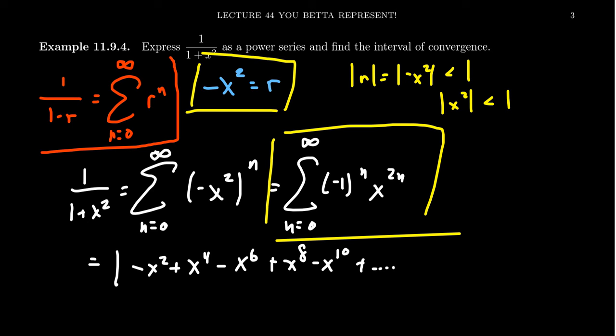When we take the square root of both sides, we need the absolute value of x to be less than 1. So x needs to be between negative 1 and 1. In other words, the interval of convergence is from negative 1 to 1.